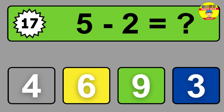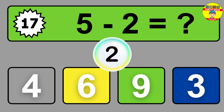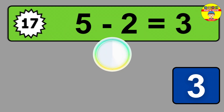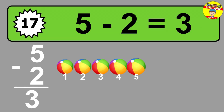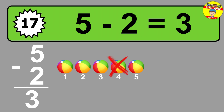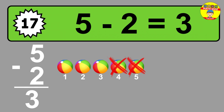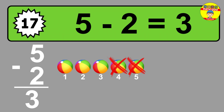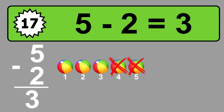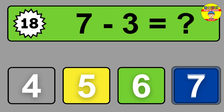Question 17. 5 minus 2 equals what? So the answer is 5 minus 2 is 3. Let's count it: 1, 2, 3.